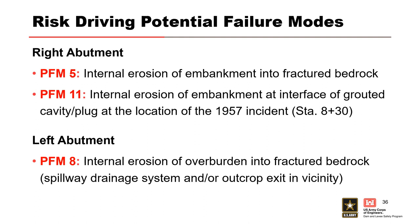The Dam Safety Modification Study completed in 2010 evaluated three primary risk drivers: PFM 5, internal erosion of the embankment into fractured bedrock at the right abutment; PFM 11, internal erosion of the embankment at the interface of the grouted cavity at station 830, the location of the 1957 incident; and PFM 8, internal erosion of overburden into the fractured bedrock at the left abutment with an unfiltered exit into the spillway drainage system. This study was performed prior to current terminology. PFM 5 and PFM 8 are both internal migration potential failure modes, while PFM 11 can be considered concentrated leak erosion, internal migration, or a combination, as is often the case in karst environments.